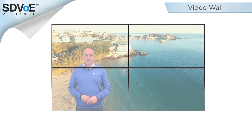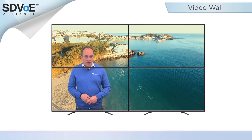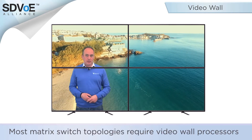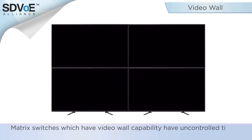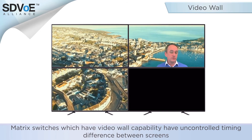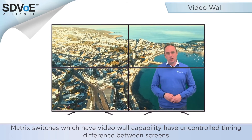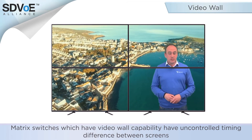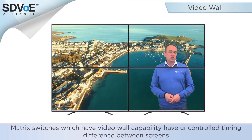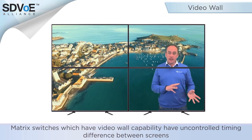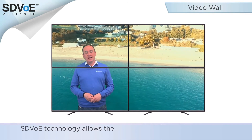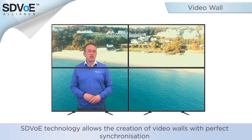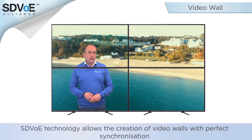Let's check out another video mode. Video walls are commonplace in ProAV, and again, with a matrix switch topology you would need separate video wall processors to achieve it. Some high-end matrix switch platforms do include a rudimentary video wall feature, but because of the matrix architecture, there's an uncontrolled timing difference between the screens. This creates distracting visual effects for any content where an object moves between screens. SDVoE technology allows the creation of video walls with perfect synchronization, eliminating image stuttering and tearing between the screens.